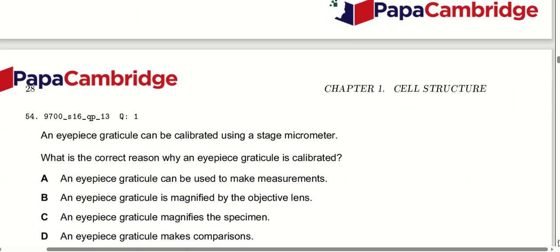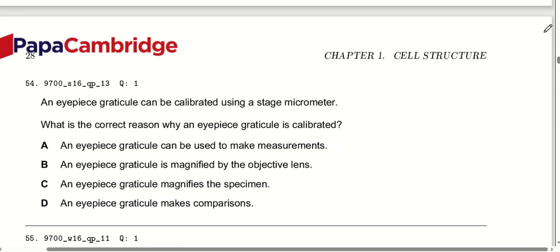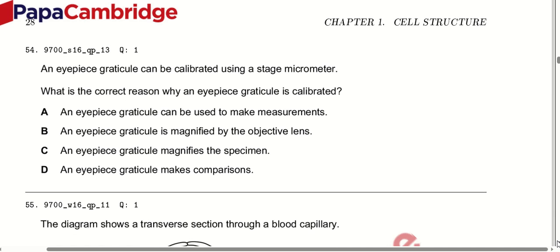An eyepiece graticule can be calibrated using a stage micrometer. Which is the correct reason why an eyepiece graticule is calibrated? An eyepiece graticule can be used to make measurements. It is magnified by the objective lens, but its magnification is not related to the objective lens in isolation. Option A is correct — the graticule is calibrated so it can be used to make accurate measurements.